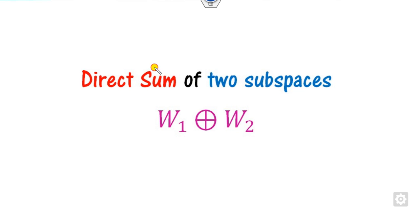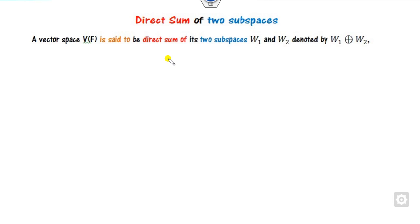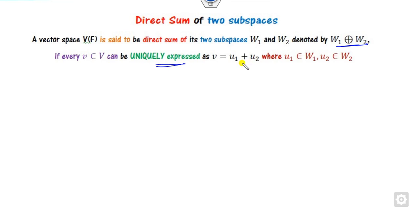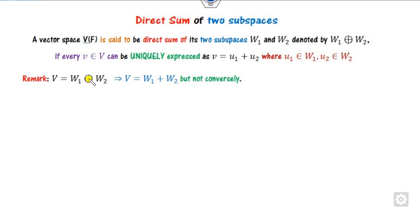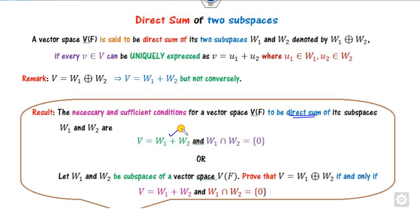Based on the linear sum, we can now define the direct sum of subspaces. A vector space w is the direct sum of two subspaces — denoted with the direct sum symbol — if each element can be written uniquely in the form u1 + u2, where u1 belongs to the first subspace and u2 to the second. Clearly, whenever there is a direct sum it implies a linear sum, but the converse is not true, as we will see in examples.